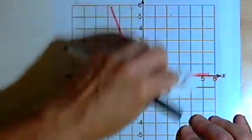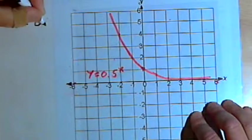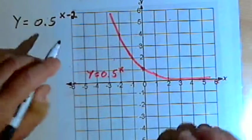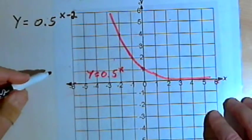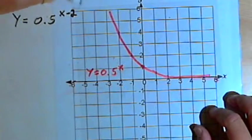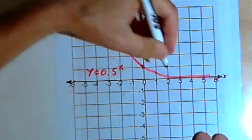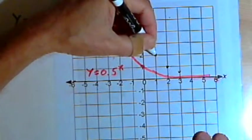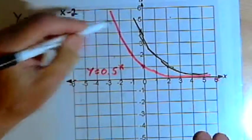So besides vertical shifts and stretches and reflections, we can also do some horizontal ones. If I have y equals 0.5 raised to the x minus 2, that minus 2 is going to shift the entire graph horizontally two units over to the right. If I add a negative number after the x, it shifts the graph that many units to the right. If I have a positive number after the x, it shifts the graph that many units over to the left. So I'll have a point at 2, 1, a point at 3, 1 half, the horizontal asymptote is going to be the same, and the graph looks something like that.